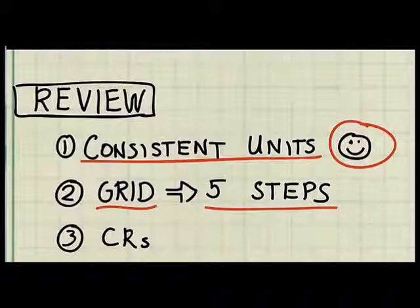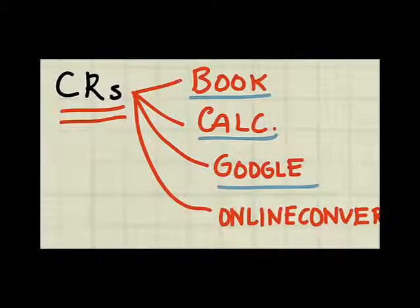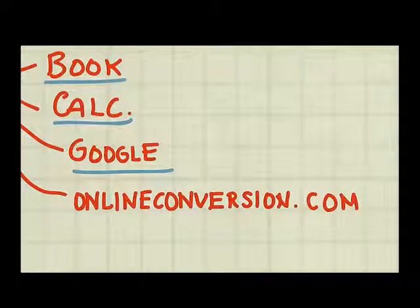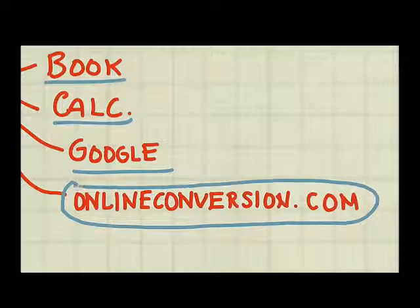There are four basic ways to find conversion ratios. Conversion ratios can be looked up in a book or engineering reference. Most calculators have conversion ratios built in. One can use Google to find conversion ratios. And one can also use the web. A fantastic site is onlineconversion.com.